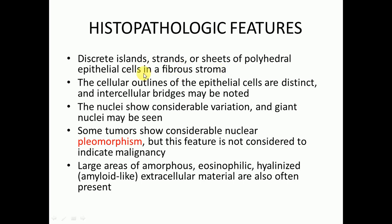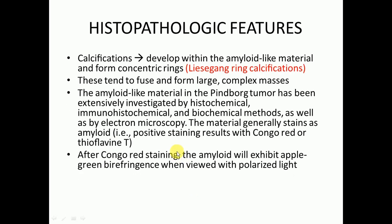Now we'll discuss histopathological features. There may be discrete islands, strands, or sheets of polyhedral epithelial cells in the fibrous stroma. The cellular outlines of the epithelial cells are distinct and intercellular bridges may be noted. The nuclei show considerable variation and giant nuclei may be seen. Some tumors show considerable nuclear pleomorphism, but this is not considered to indicate malignancy. Large areas of amorphous eosinophilic hyalinized amyloid-like extracellular material are often present. Calcification develops within this amyloid-like material and forms concentric rings, known as Liesegang ring calcification, which is a characteristic histopathological feature of the Pindborg tumor.